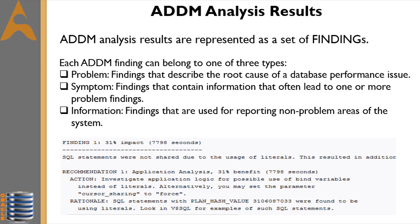Note that the benefit is given as a portion of the total DB time, not as a portion of the finding's impact. The rationale provides additional information on tracking potential SQL statements that were using literals and causing the performance issue. Using the specified plan hash value of SQL statements that could be a problem, a DBA could quickly examine a few sample statements. When a specific problem has multiple causes, ADDM may report multiple problem and symptom findings whose impacts can overlap, so summing all impacts can yield a number higher than 100 percent of DB time.